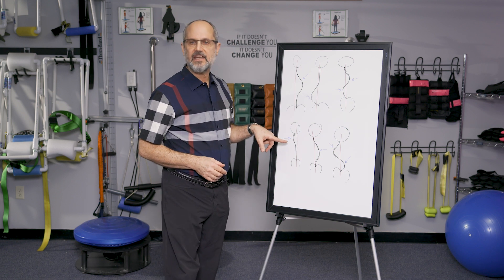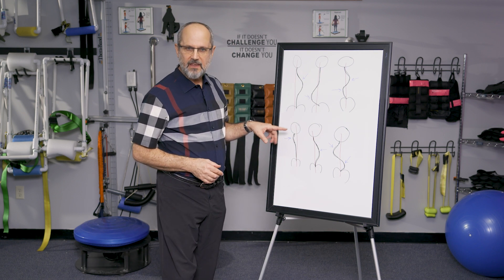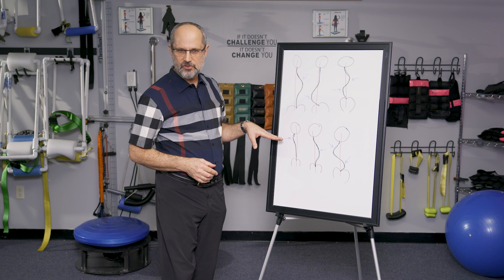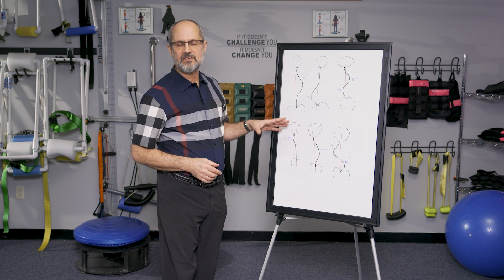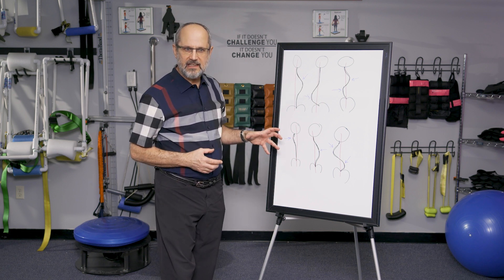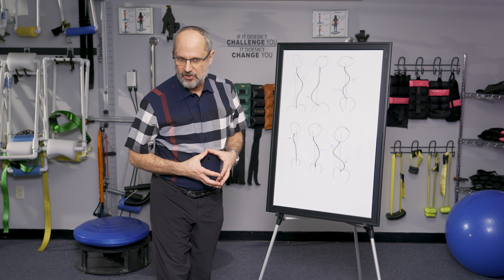Here we have a cervical curve. The apex of the curve — the part that's most twisted — is furthest from the red line in the neck area. We call this a cervical scoliosis.